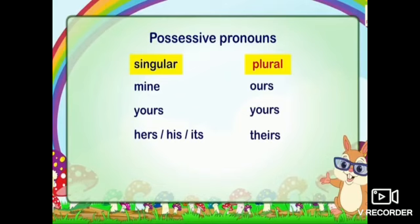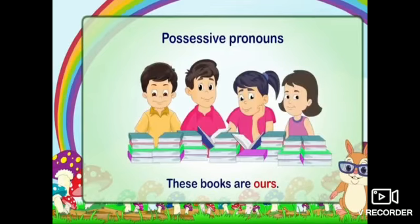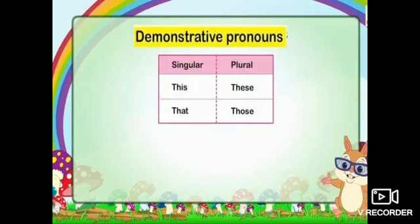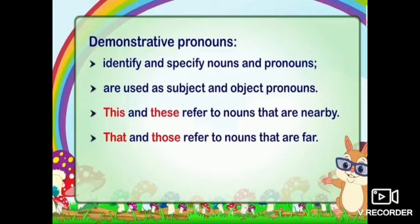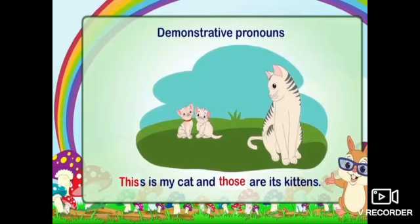Next, in plural form. Demonstrative pronouns also have two forms: singular and plural. The words this, these, that, and those are demonstrative pronouns. They identify and specify nouns and pronouns, and are used as subject and object pronouns. This and these refer to nouns that are nearby; that and those refer to nouns that are far. For example: This is my cat and those are kittens.